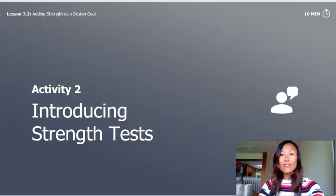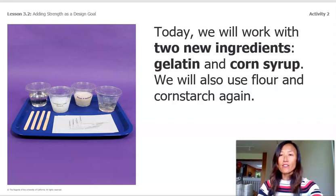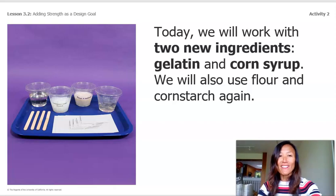Activity two: Introducing Strength Tests. Today we will work with two new ingredients — gelatin and corn syrup — and we will also use flour and cornstarch again. We already know a little about gelatin from reading 'Jess Makes Hair Gel' and looking in the Handbook of Interesting Ingredients. Today we'll have the opportunity to make observations of the new ingredients and set up a new kind of test to find out how strong they are.